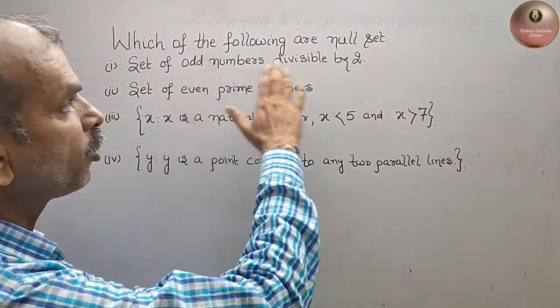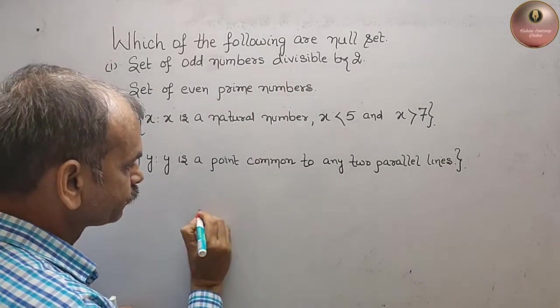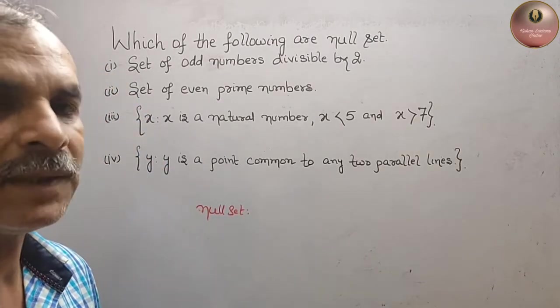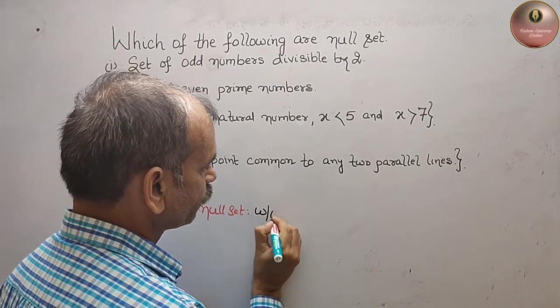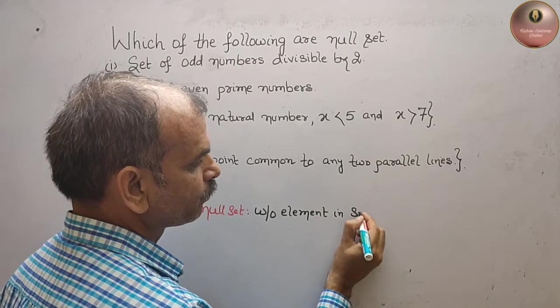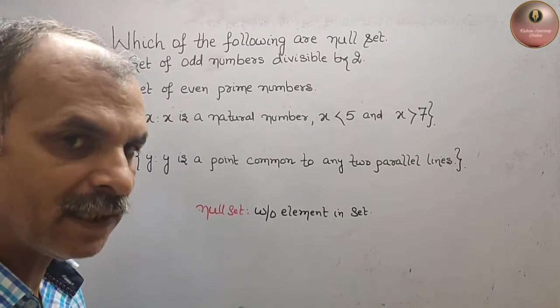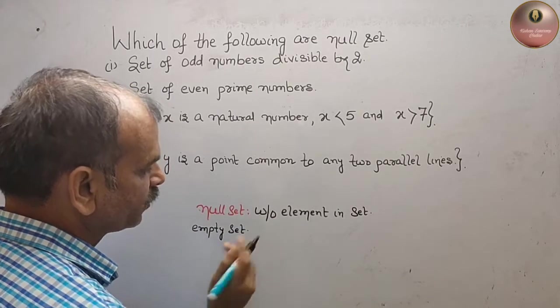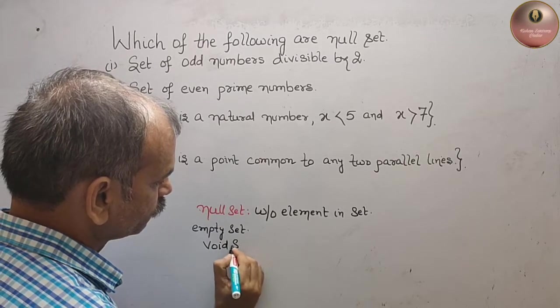Your question is: which of the following are null set? First we will understand what is the null set. Null set means it's an empty set, that means without any element in the set. We can say null set is an empty set or we can say it's a void set.